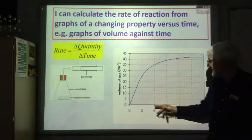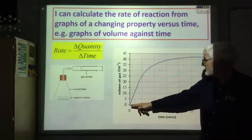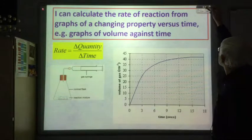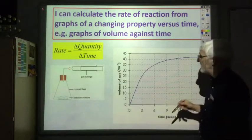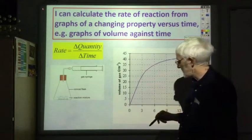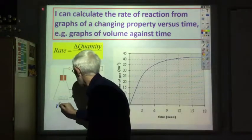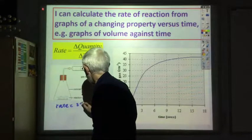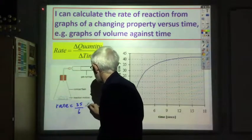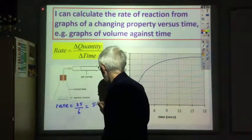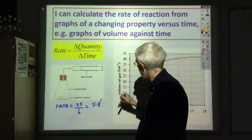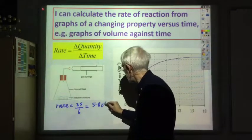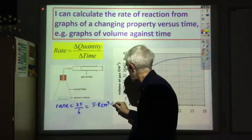Over the first six seconds the volume of gas has changed from zero to 35, so the rate of reaction for the first six seconds would be 35 divided by 6, which equals 5.8 cubic centimetres per second.